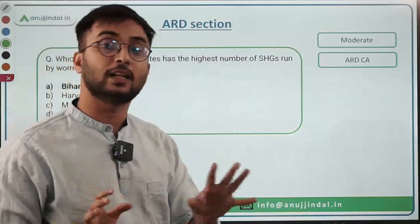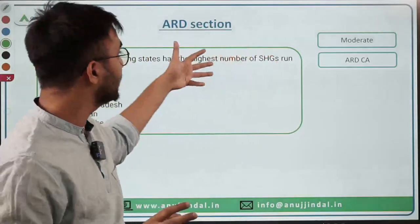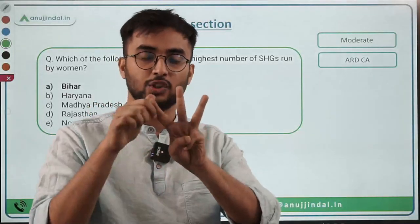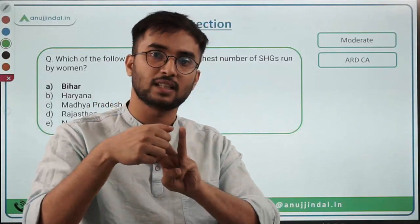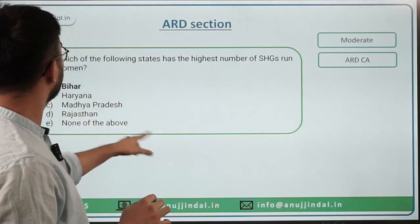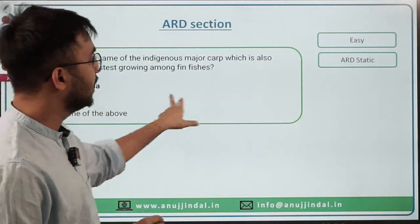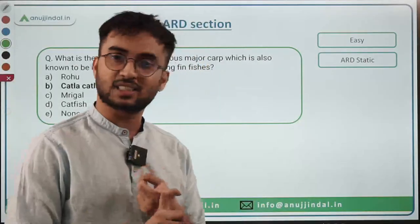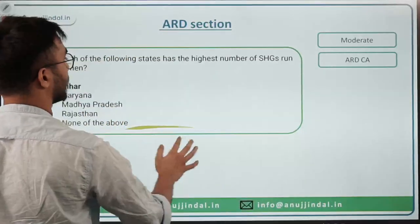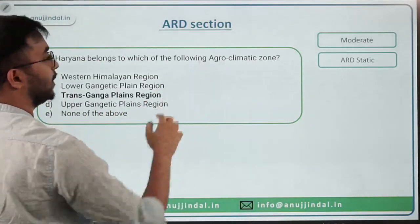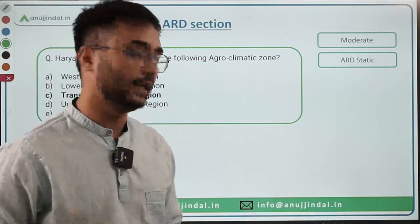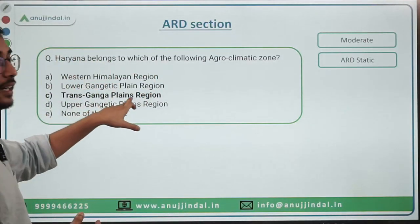Looking at all these questions, you should understand their nature. Any question and any topic can be divided into three parts: General Awareness, Current Affairs, and Static. For example, Catla-catla from fisheries is static. SHG data from Bihar is current affairs. Agro-climatic zones — Haryana in the Trans-Gangetic Plains — is static. Each topic you study, analyze from all three angles.